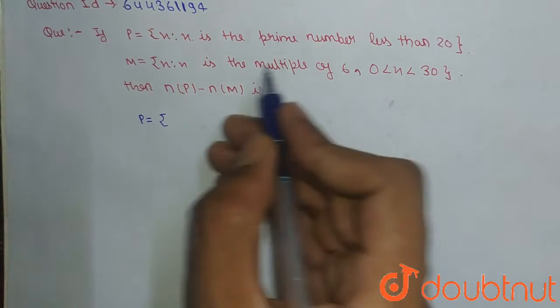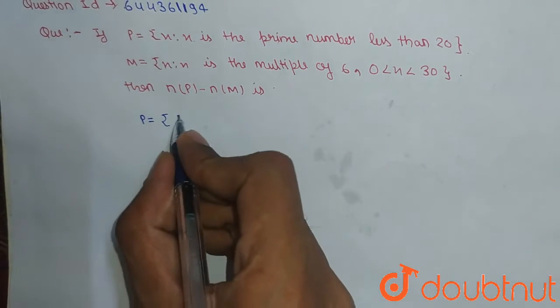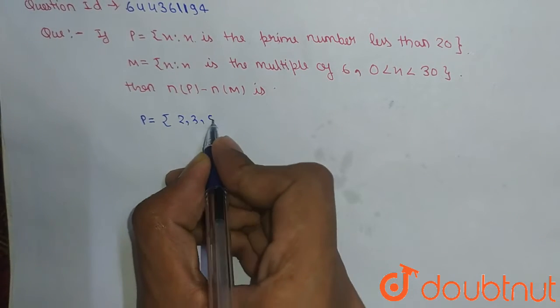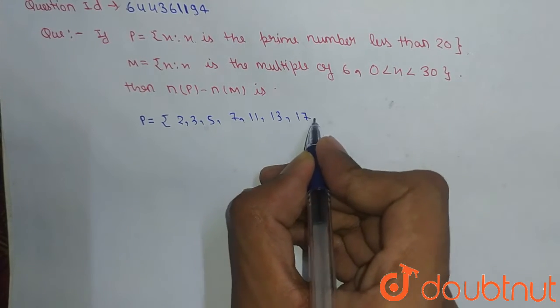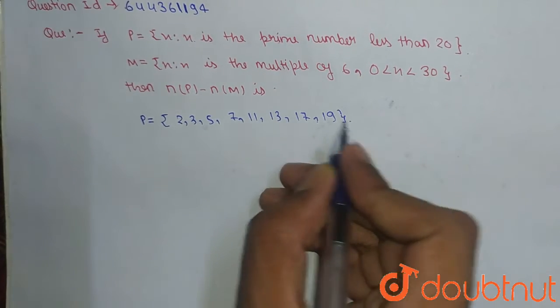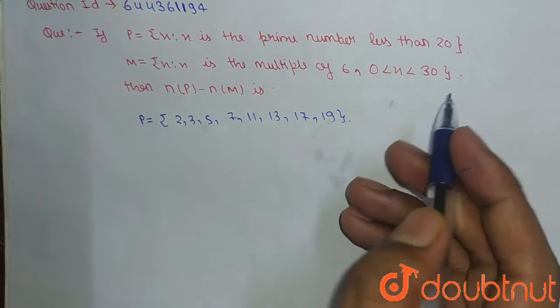So let's check the numbers less than 20 which are prime. They are 2, 3, 5, 7, 11, 13, 17 and 19. So these are the prime numbers less than 20.